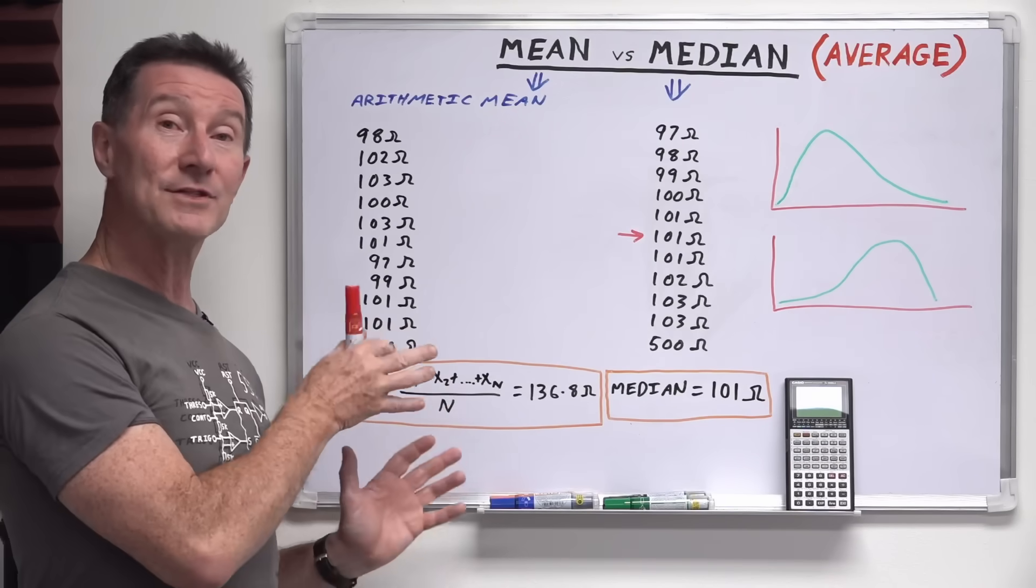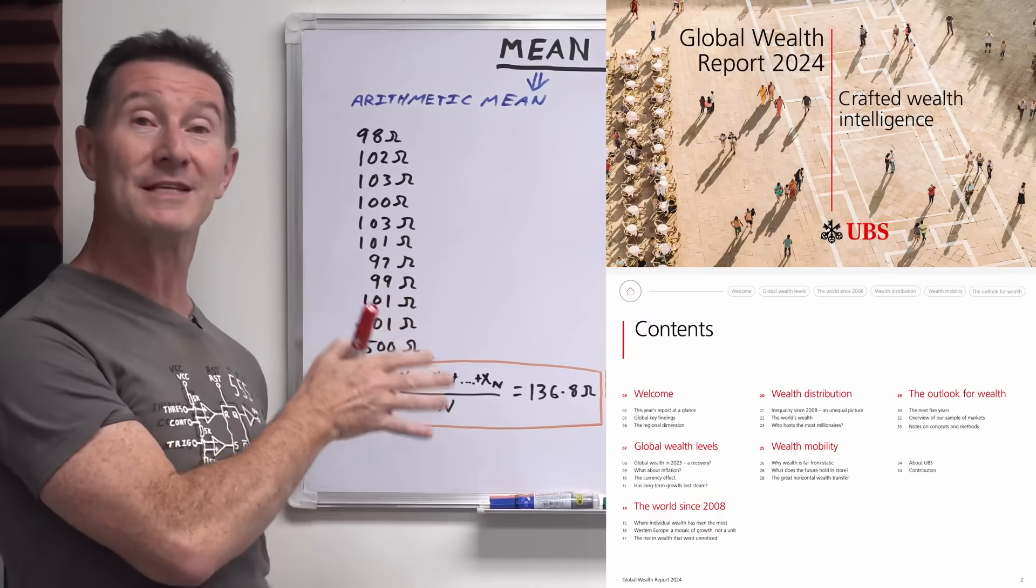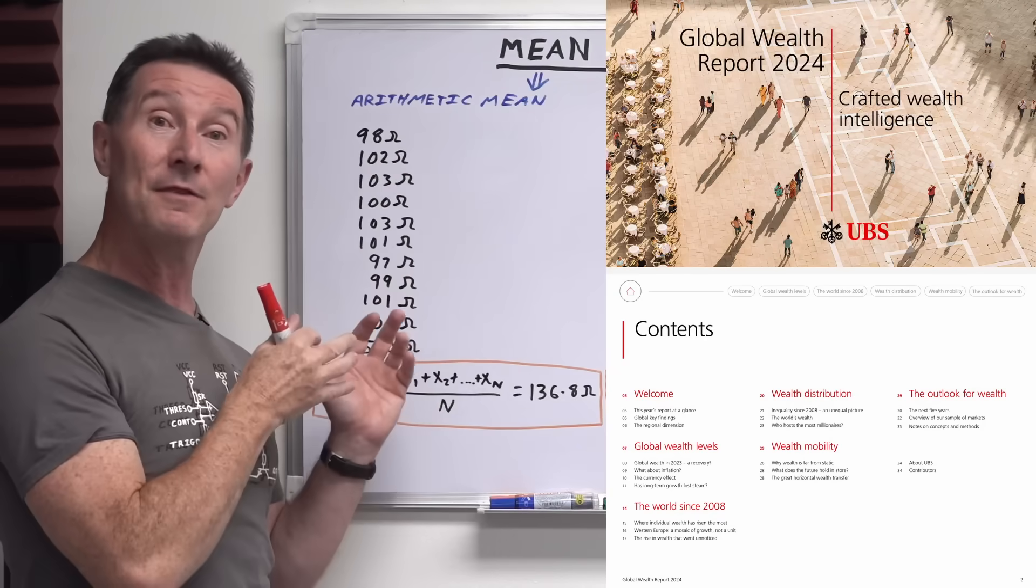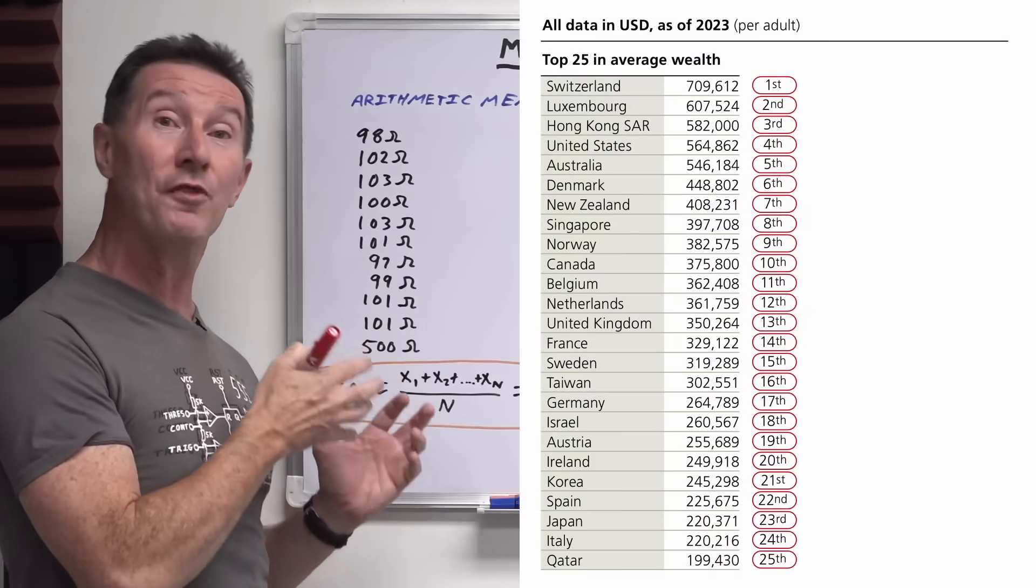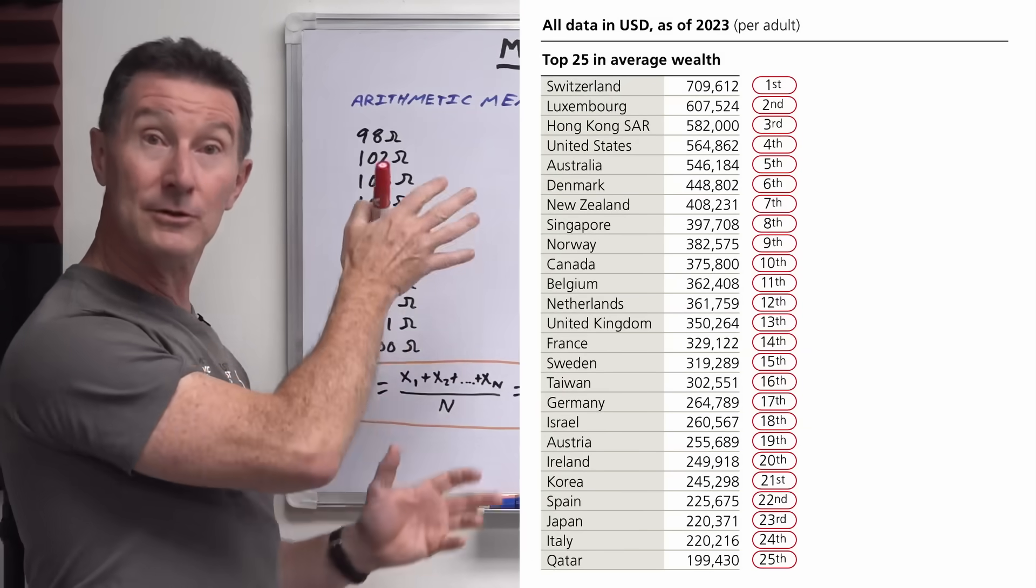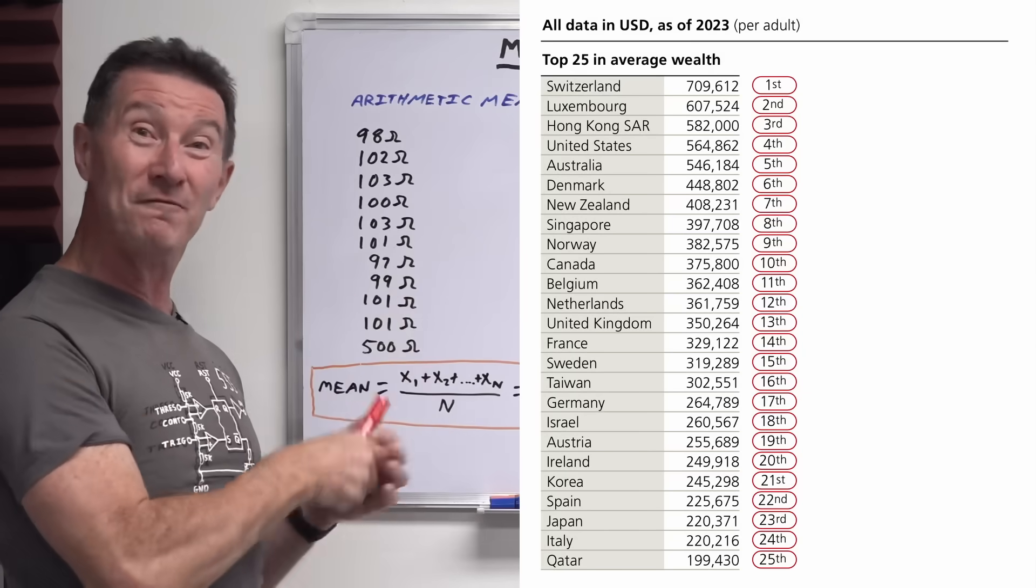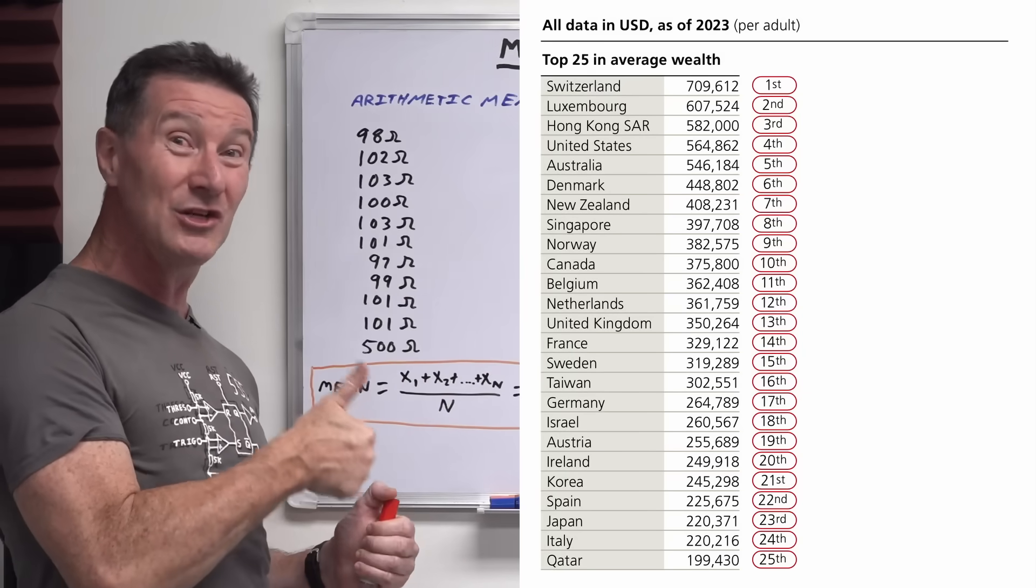But I'll give you another example. Here's a report, a wealth report from UBS. Every year they produce a wealth report that ranks every country in the individual person's wealth in that country. And here's the list here. And you can see that number one is Switzerland, number four is the US, number five is Australia. Good on us, you little ripper.